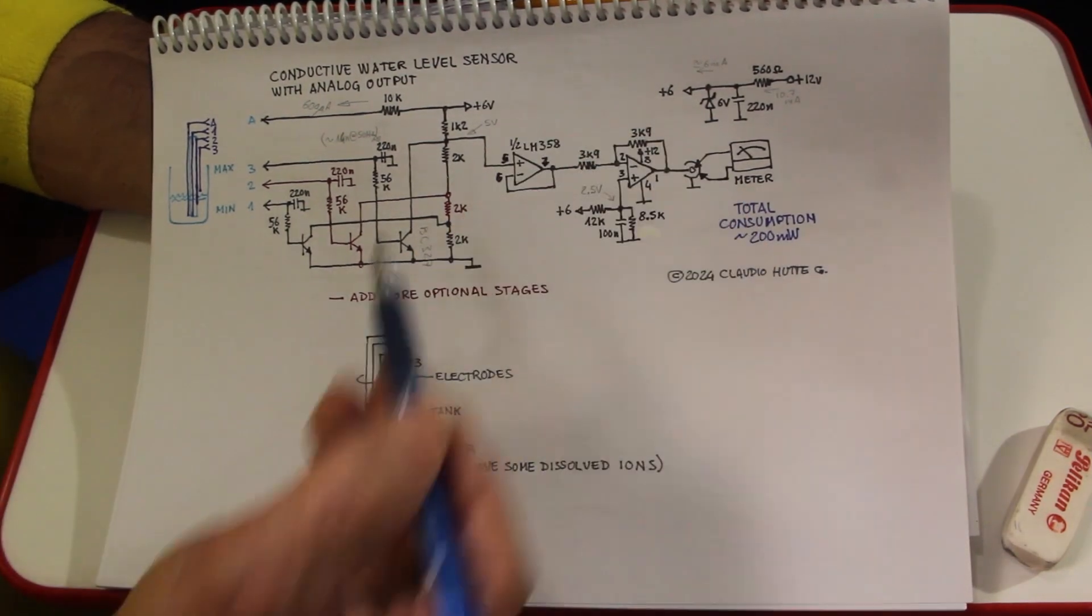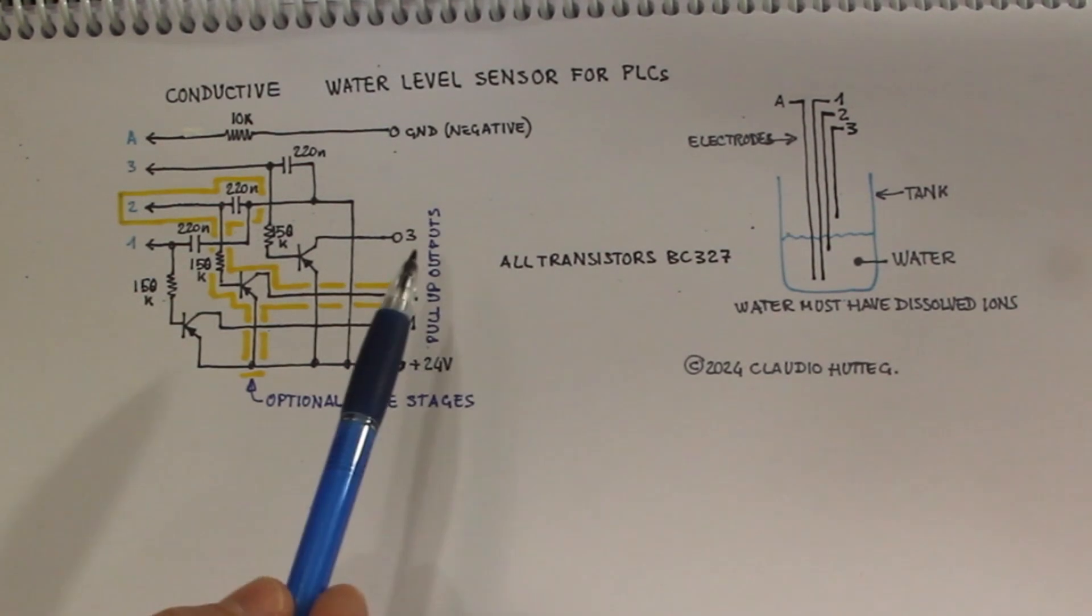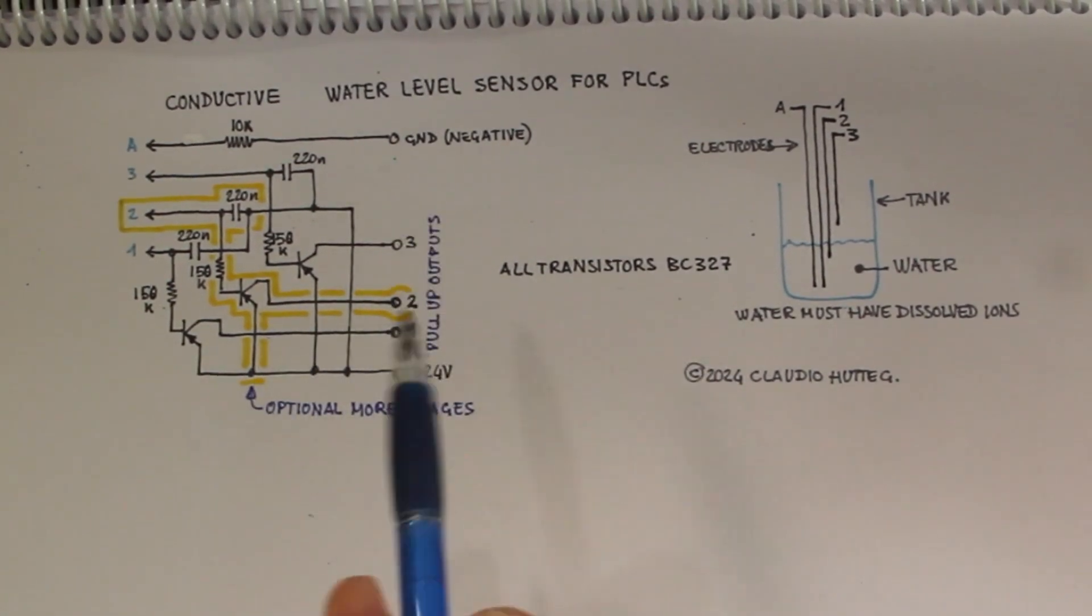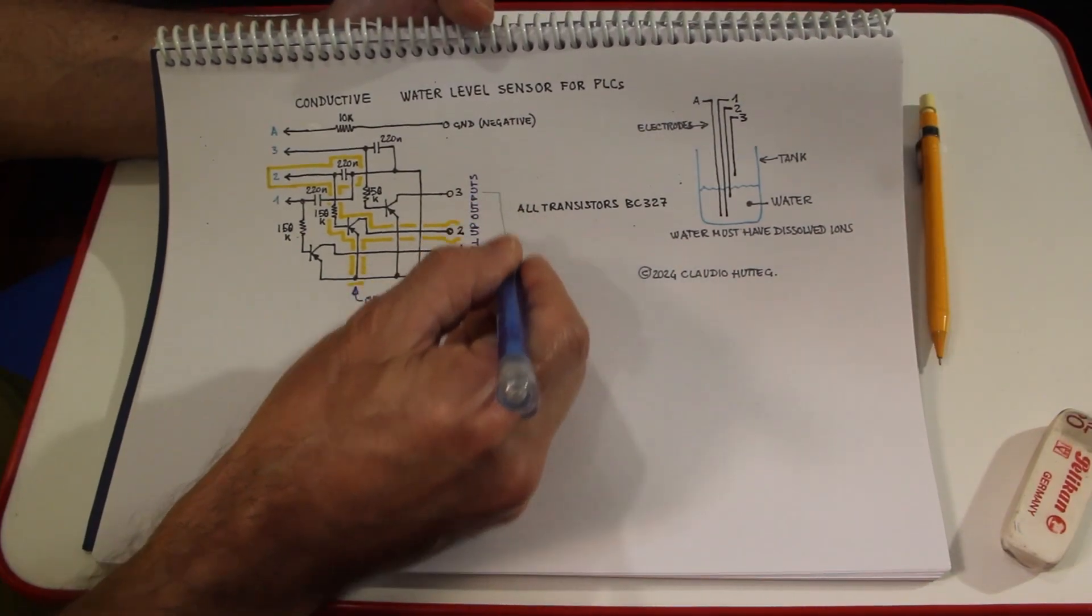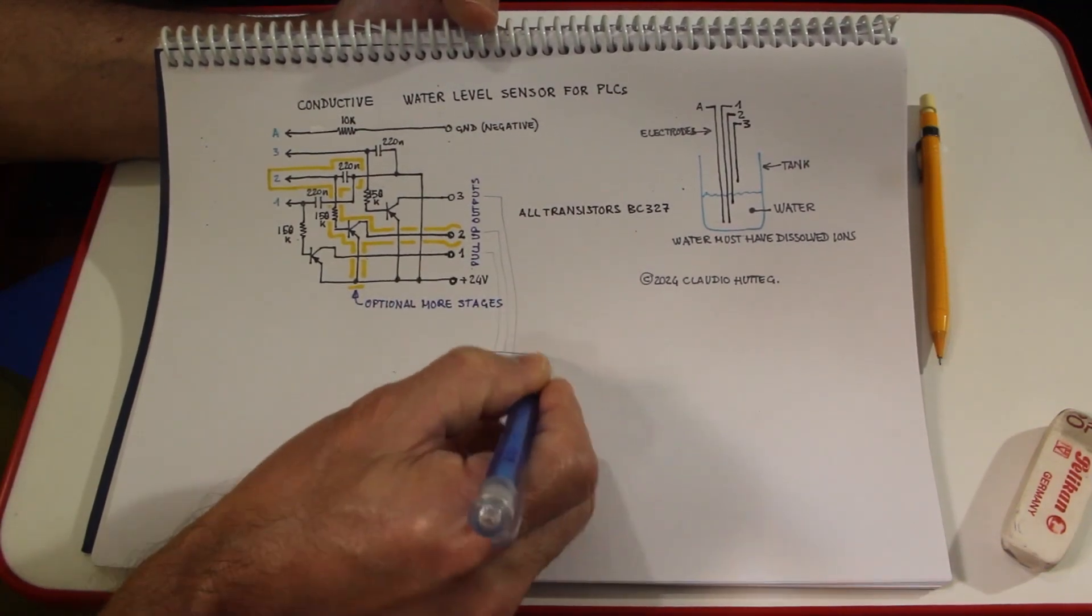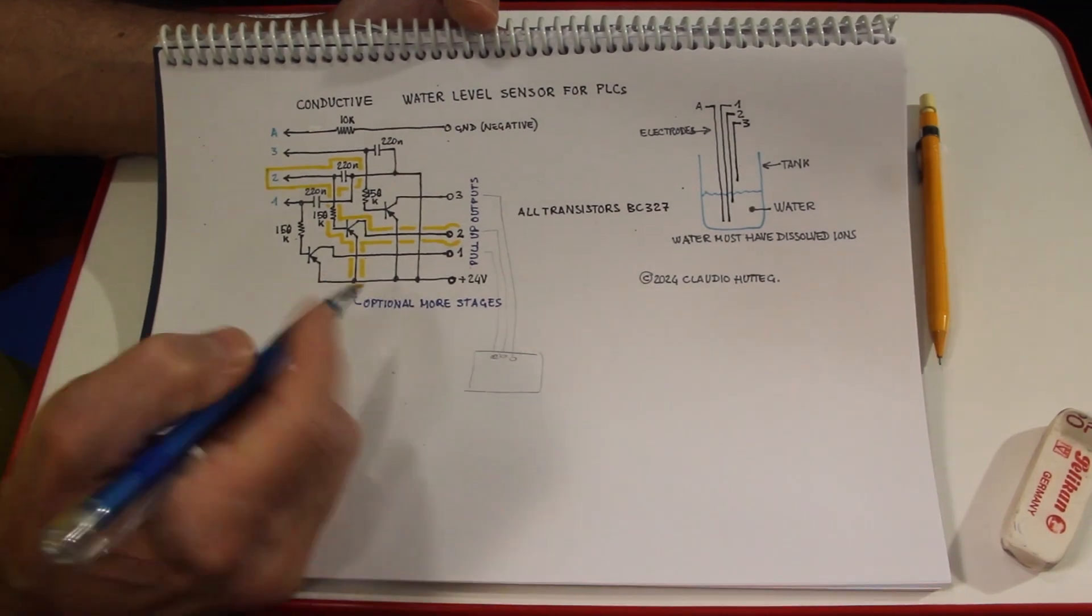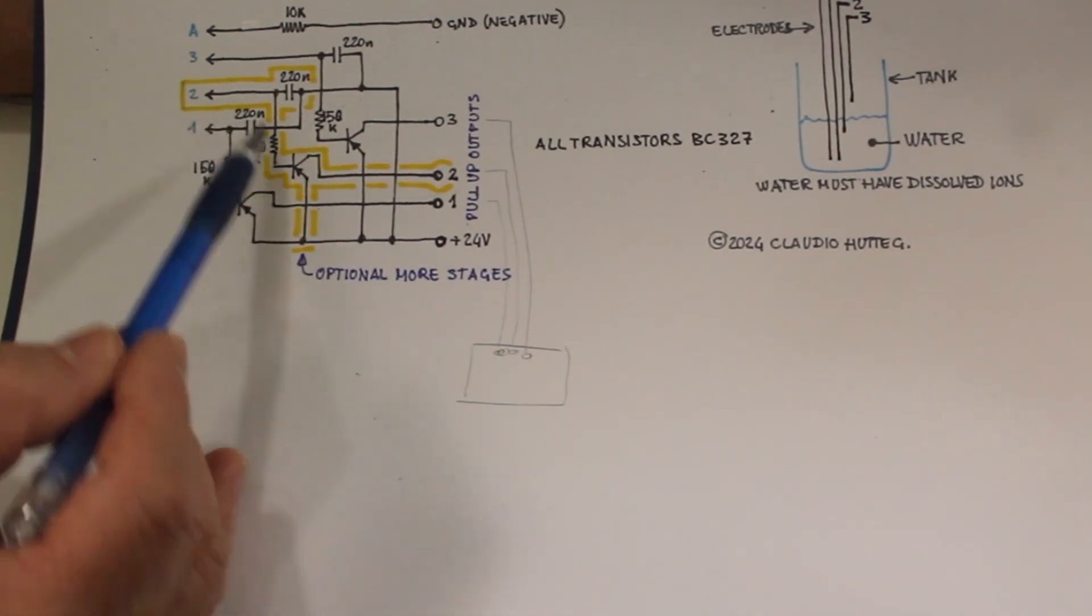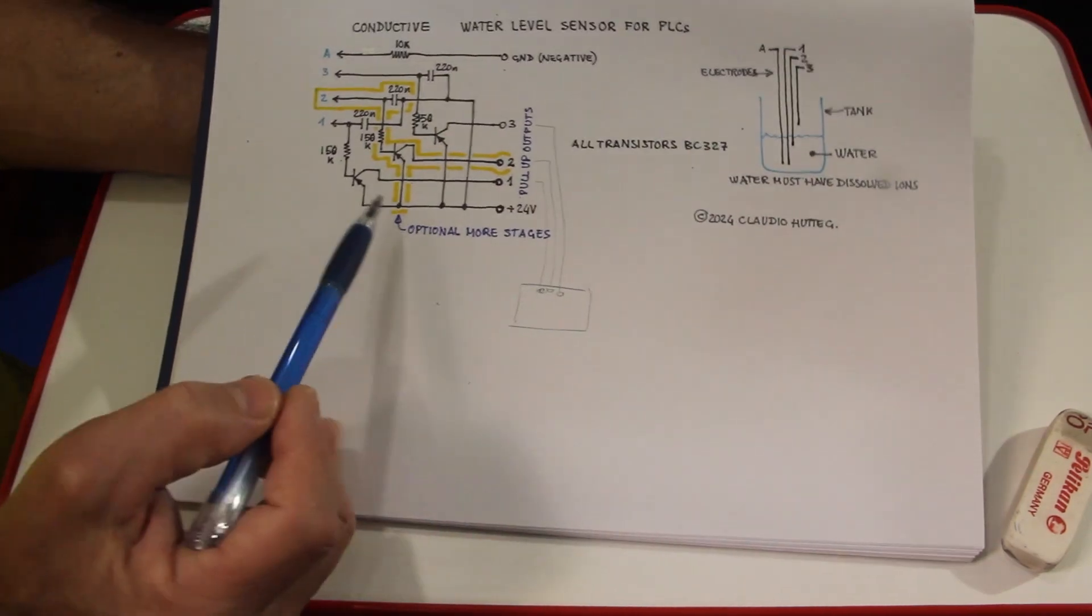And this is the other circuit that provides discrete outputs that can be connected to the inputs of a PLC. So like this, you have here a wire, another wire, another wire, and then this goes to the three inputs of a PLC. And again, here you can have more intermediate stages, adding more stages like this one, enhanced in yellow.